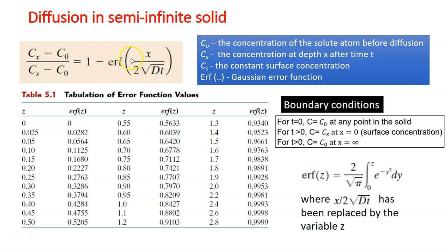As you can see in this formula for the semi-infinite solid, this formula can be used if it meets certain boundary conditions. There are three boundary conditions here. The first one would be for when T equals to zero, C will equal to the C0, which is the concentration of the solute atom before diffusion at any point in the solid.